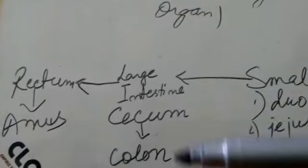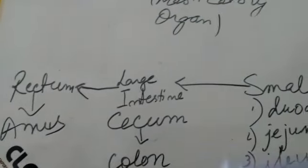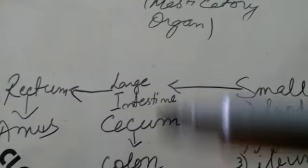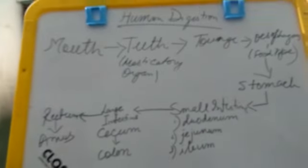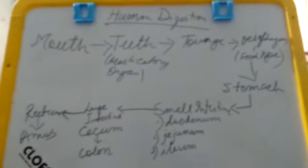In the cecum and colon, nothing is absorbed except water. They are not secretory in function, and since villi are also absent here, only water absorption occurs. This completes our overview of the human digestive system from mouth to anus.